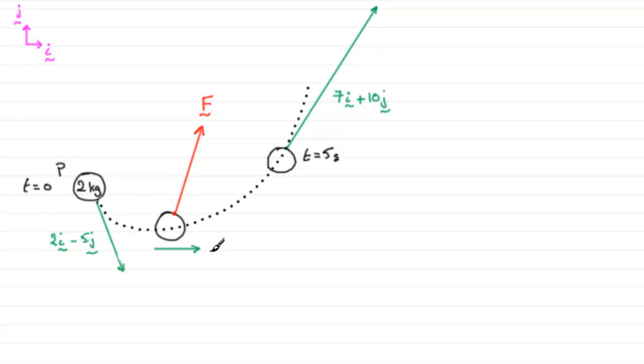But what I do know is it's going to be something of the form, let's say, some constant lambda times i. There's going to be no j component, unlike these two velocities that have j components.